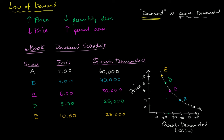What I want to do in this video is focus on these other things that we've been holding equal — the things that allow us to make this statement, that allow us to move along this curve. And think about if we were to change one of those things we were otherwise considering equal, how does that change the actual curve? How does that actually change the whole quantity demanded-price relationship?